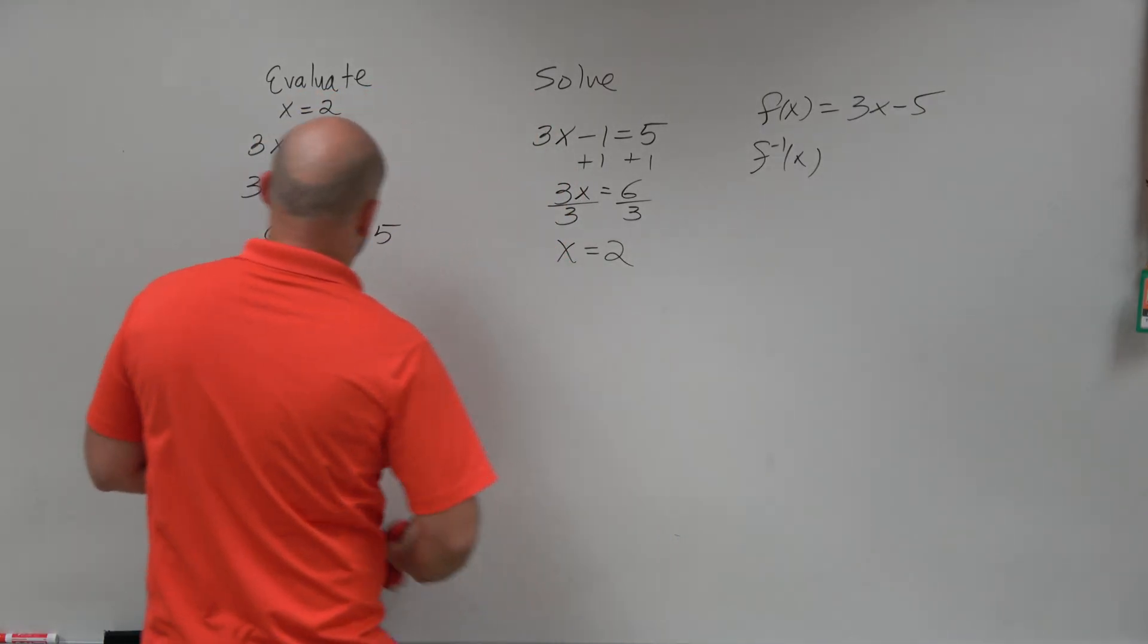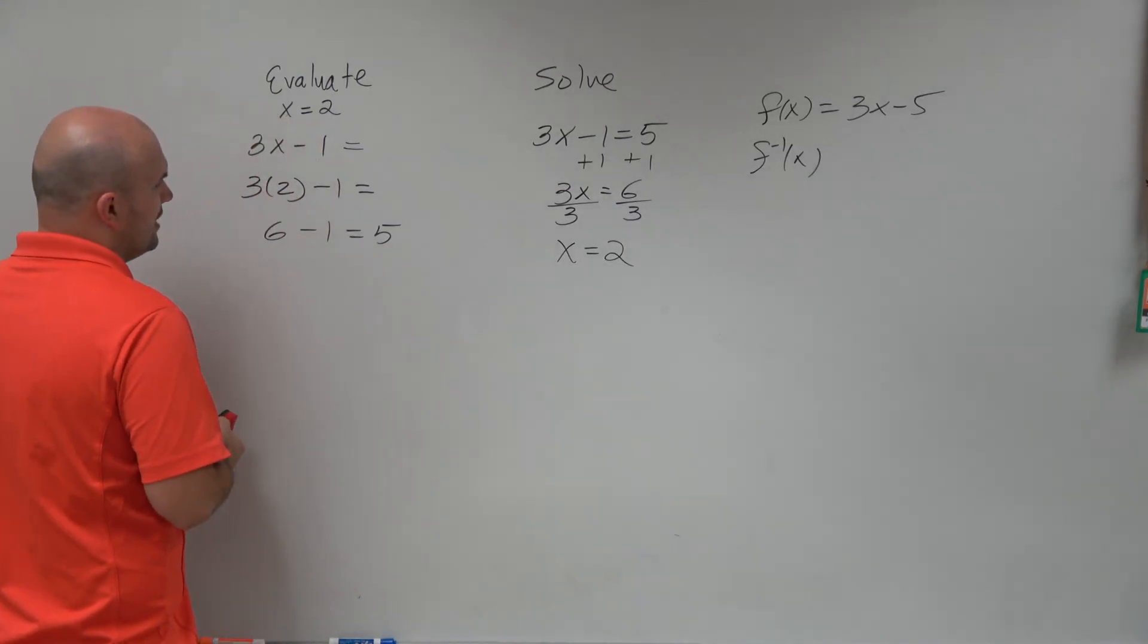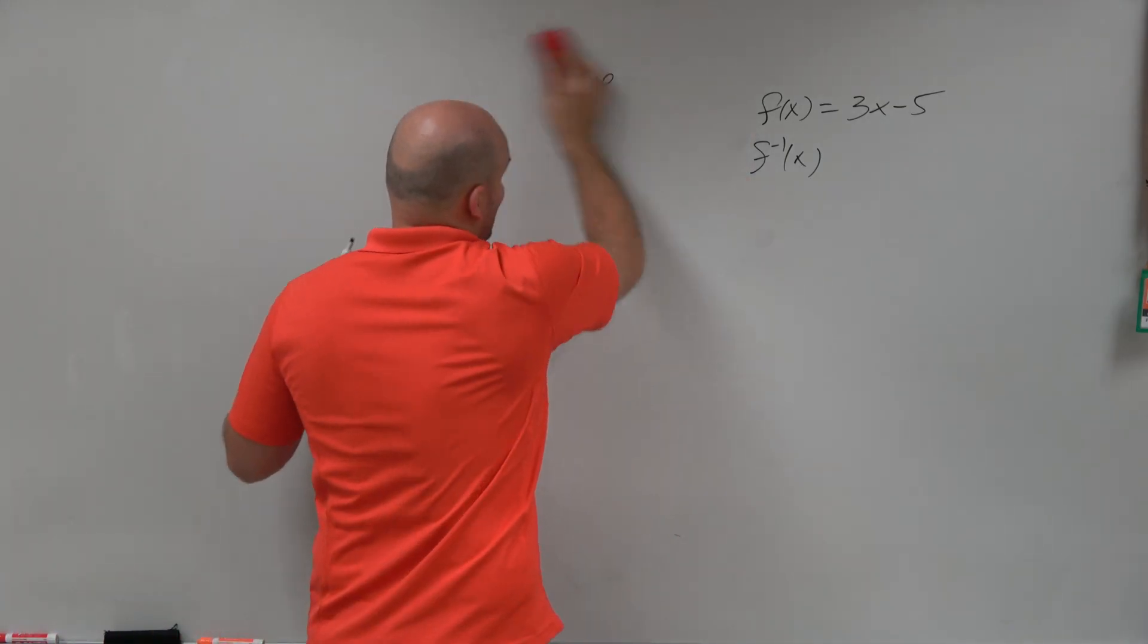So when they take you back to the identity element, which would just be x, that comes into play a couple important ways. First of all, let's look at the graphs.